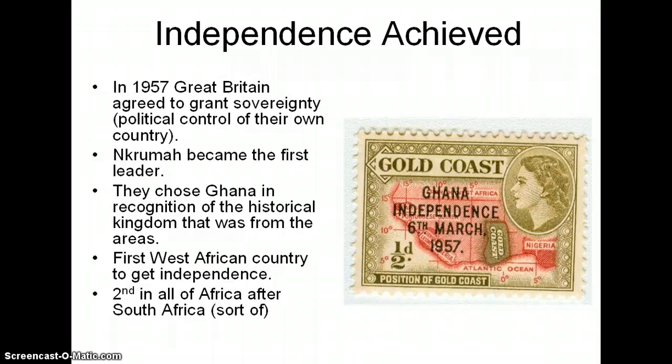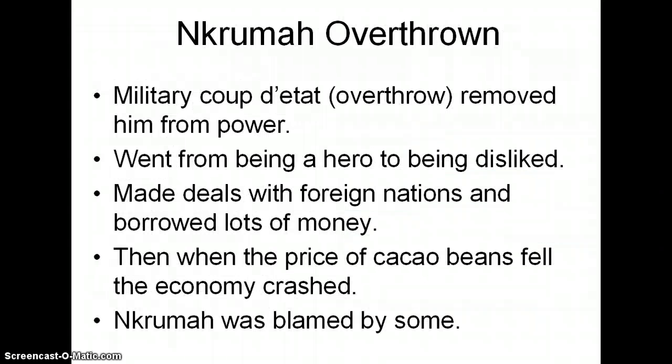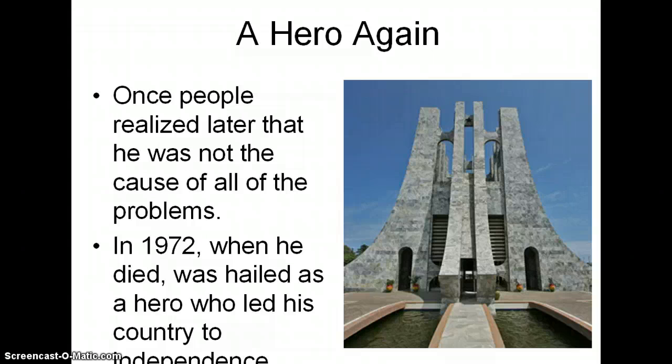It was second in all of Africa after South Africa. Now, Nkrumah was actually overthrown in a military coup d'état, which removed him from power. He went from being a hero to being disliked. He essentially made deals with foreign nations and borrowed lots of money to do things like build a big dam on the Volta River up by Lake Volta. When the price of cacao beans fell, the economy crashed and Nkrumah was blamed by a lot of people. But once people realized later that he was not the cause of their problems, they started to think better of him. In 1972, when he died, he was hailed as a hero who had led his country to independence. This is actually an image of his mausoleum — pretty fancy.